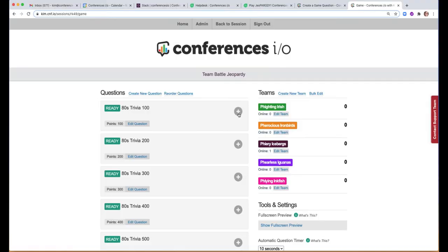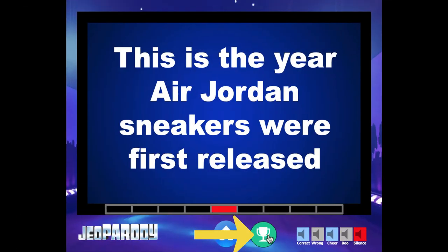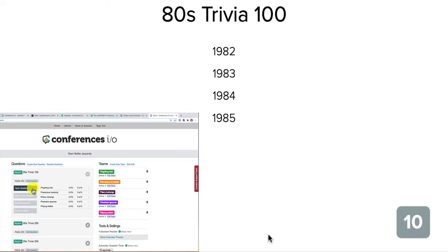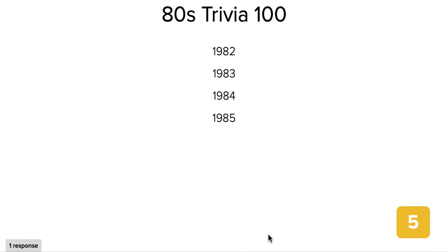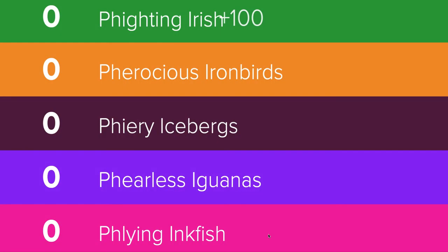While the host reads the Jeopardy clue aloud, the moderator should find the question in Team Battle and click the plus sign. After the Jeopardy clue has been read, the host must click the trophy button while the moderator clicks Open Question. This will automatically advance to slide number 10 — your live content slide — which will reveal the multiple choice answer options and allow players to select an answer on their device. When the moderator clicks Show Correct Answer, the answer is highlighted on the screen. Then, by clicking Score the Results, the leaderboard is displayed and updated in real time.